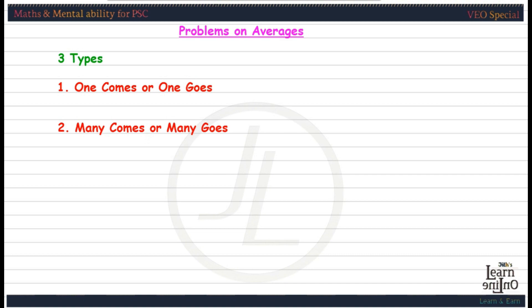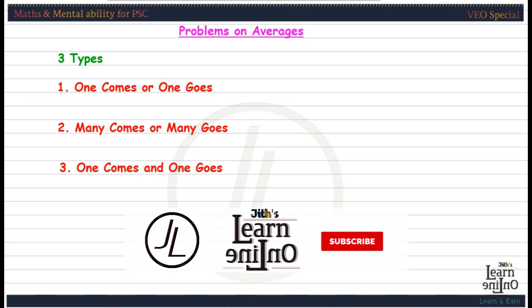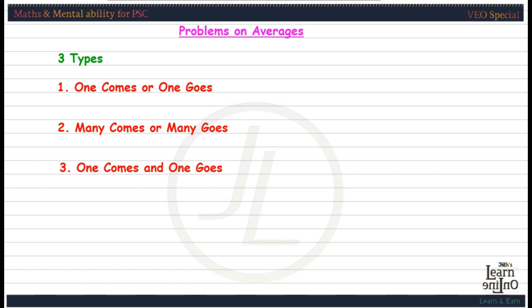If you have a few different types of students, you can change the average. That is 2 types. If you have a student in a group, you can change the average.